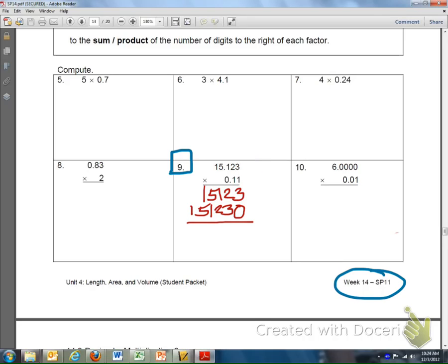Now we go through and we add these numbers together. 3 plus 0 is 3. 3 plus 2 is 5. 2 plus 1 is 3. 5 plus 1 is 6. 1 plus 5 is 6. And 1 has nothing to add to it.